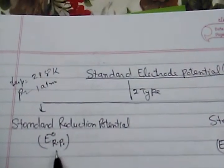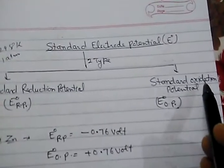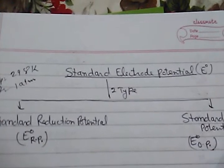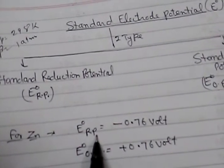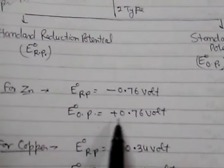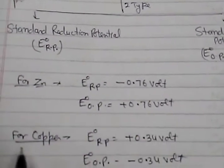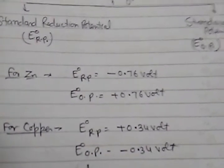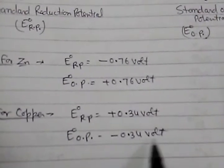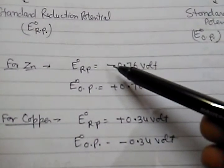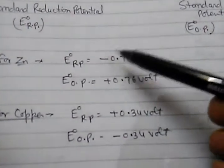There are two types: standard reduction potential and standard oxidation potential, because the electrode gets either oxidized or reduced. For example, the standard reduction potential of zinc is minus 0.76 volt, while the standard oxidation potential of zinc is plus 0.76 volt. For copper, standard reduction potential is plus 0.34 volt and standard oxidation potential is minus 0.34 volt. The numerical values are the same but signs change according to reduction or oxidation.